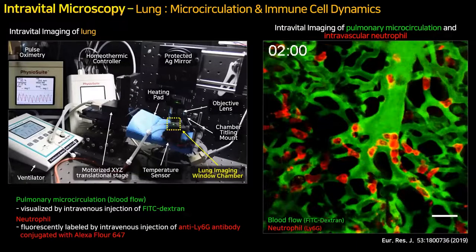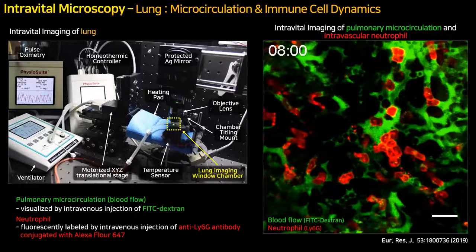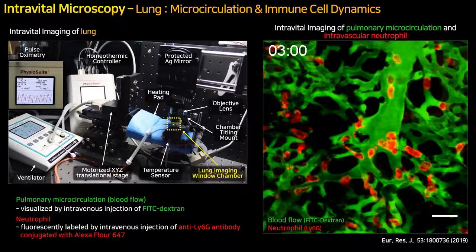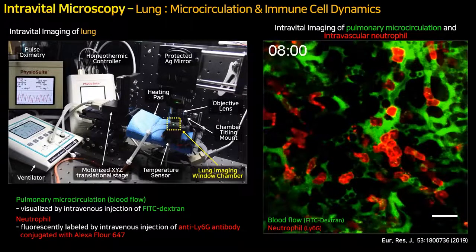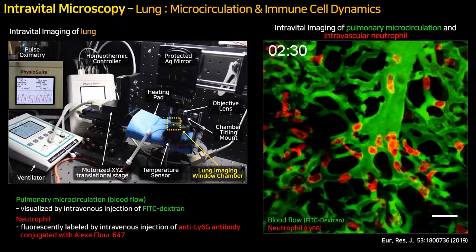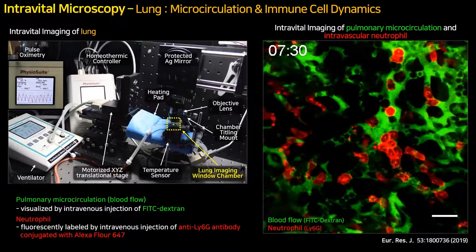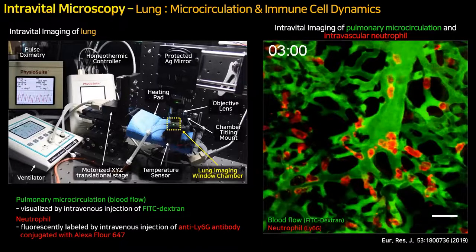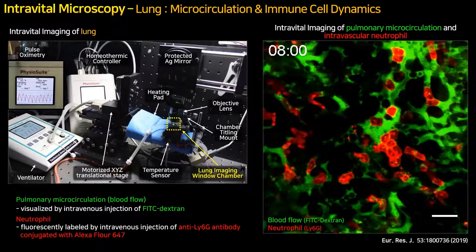For intravital lung imaging, when we make an incision on the rib, the air pressure will change, thereby killing the mouse. So we need to make the mouse breathe again by intubation, connected to a ventilator. Together with a lung imaging window chamber for stable visualization, we can acquire a clear video of neutrophil dynamics in pulmonary vasculature after sepsis induction by injecting LPS.